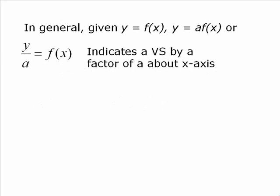Now here's the general thing. In general, given y equal f at x, y equal a f at x or y over a equal f at x indicates a vertical stretch. So vs is shorthand for vertical stretch by a factor of a about the x-axis. The letter we use typically is a. Notice the two different ways we write it.